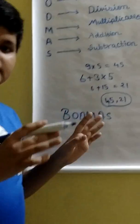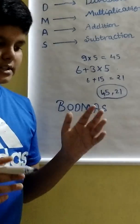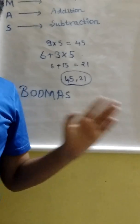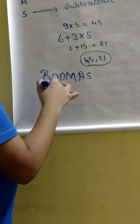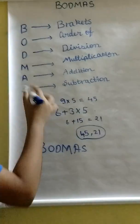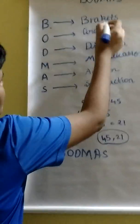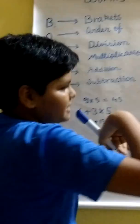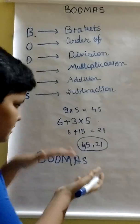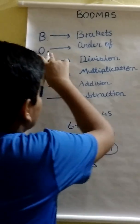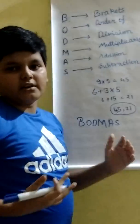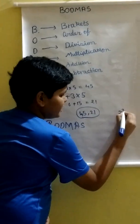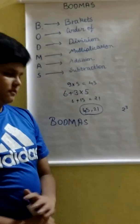This is our BODMAS rule here. Now, what is the full form of B-O-D-M-A-S? The full form of BODMAS is: B stands for brackets and there are different types of brackets, I will explain this later on. O stands for order of, which means exponents or power. For example, 2 to the power of 3. This is an example of order of.